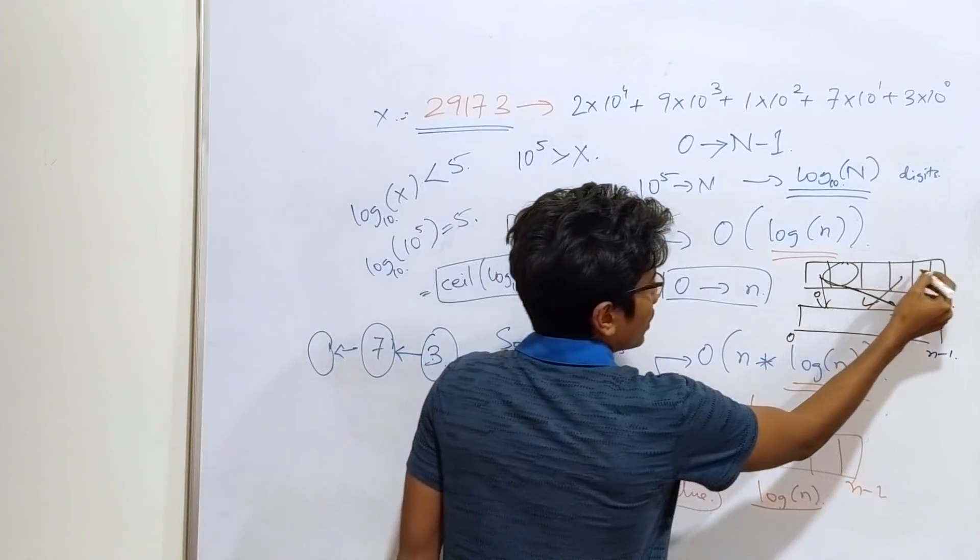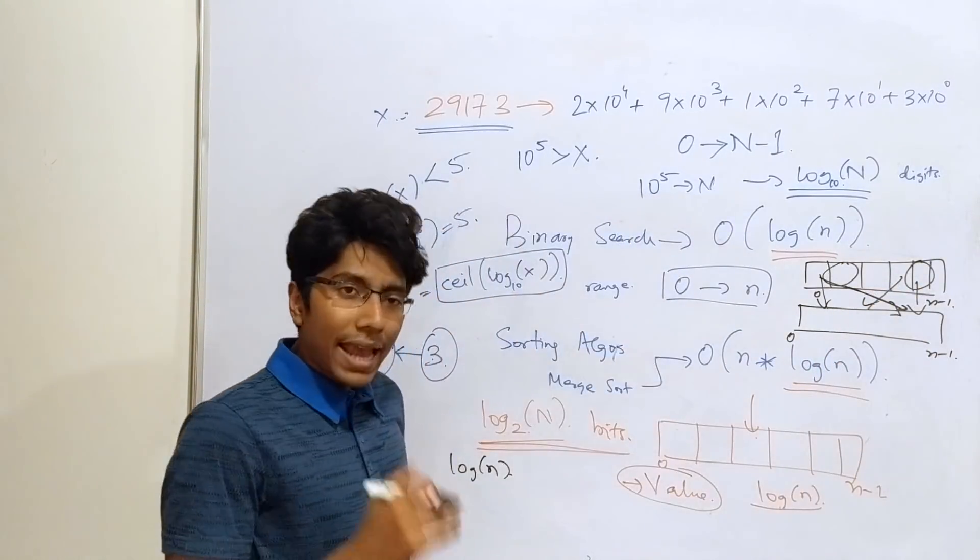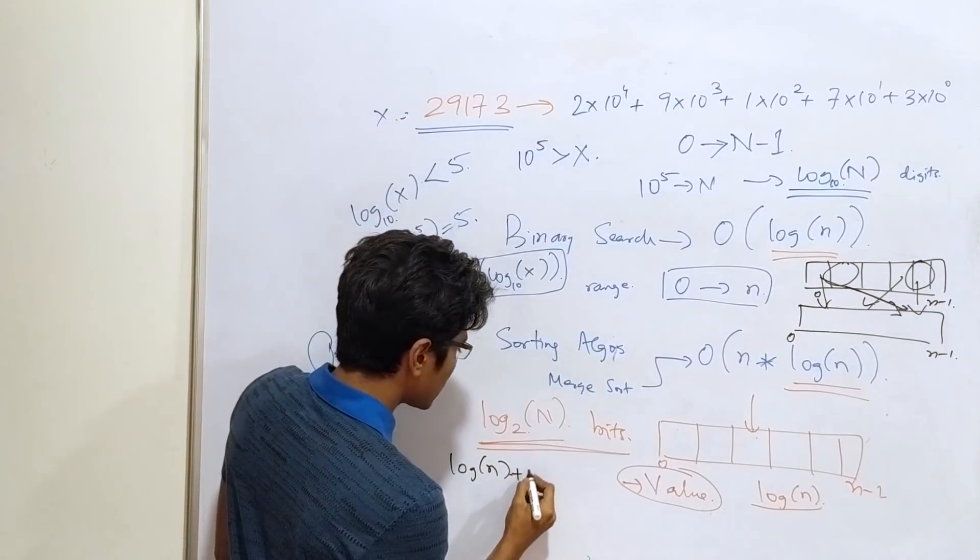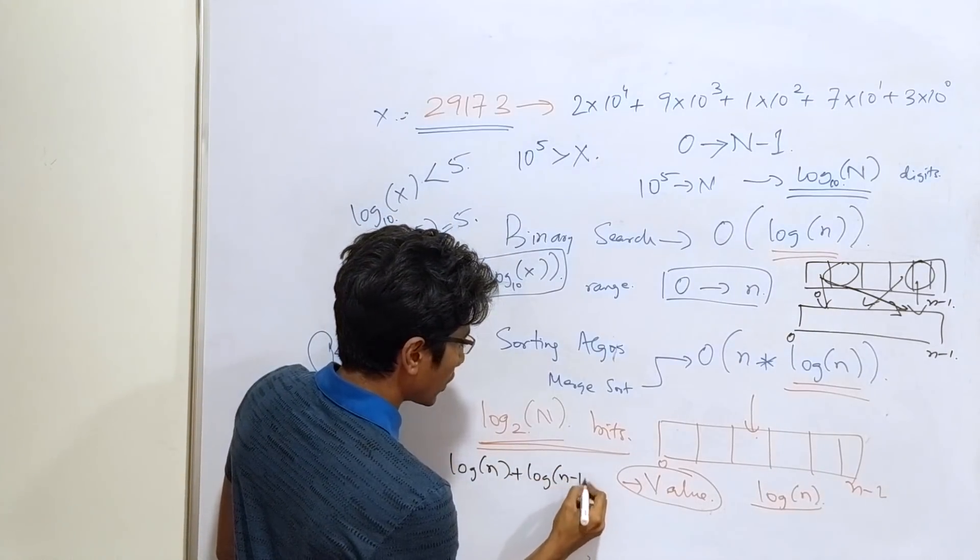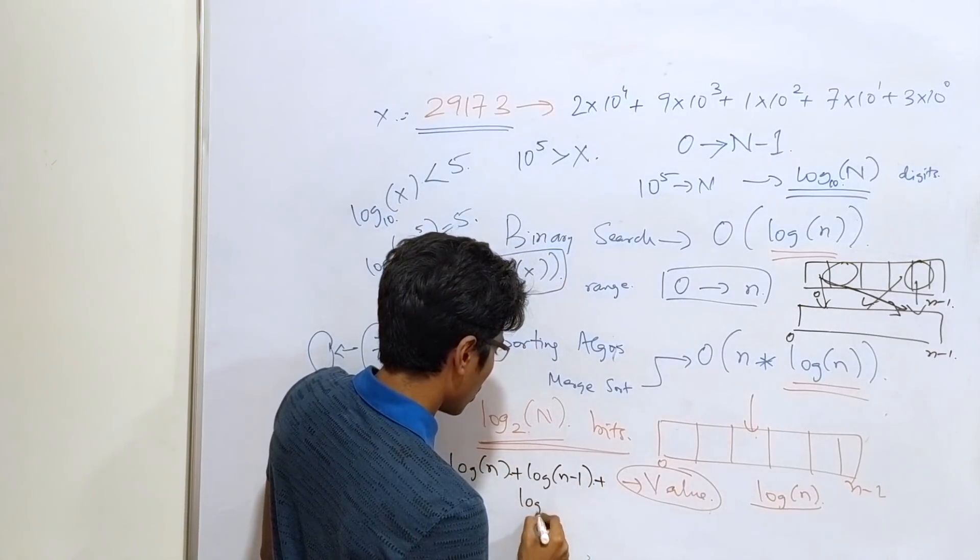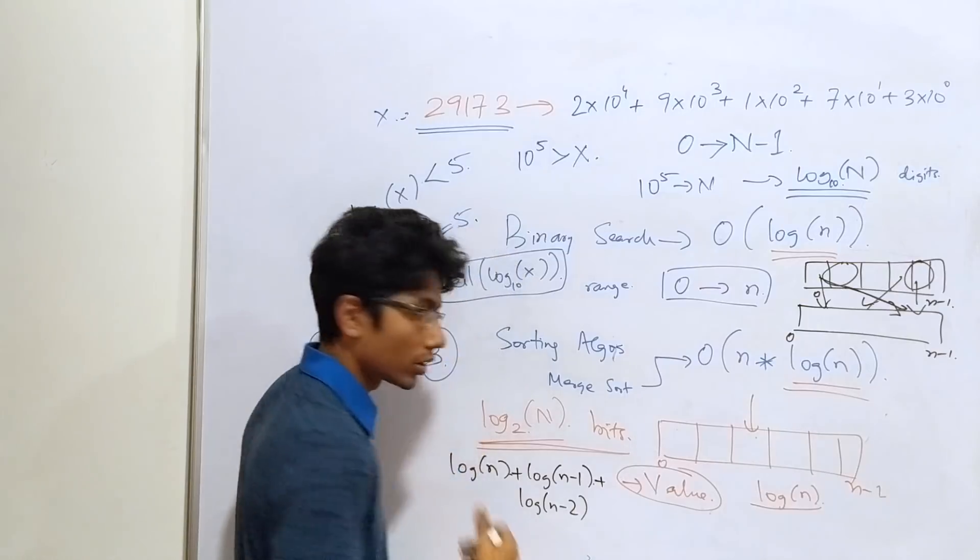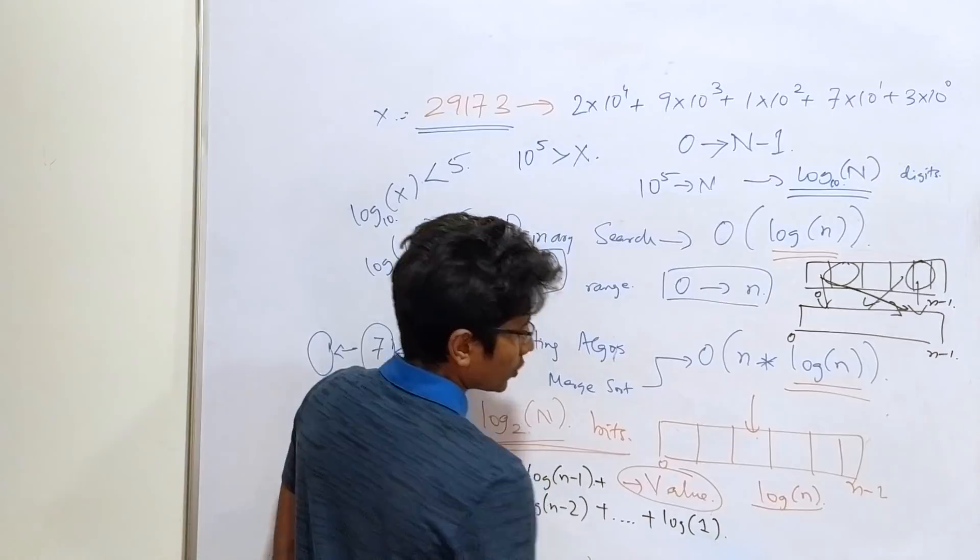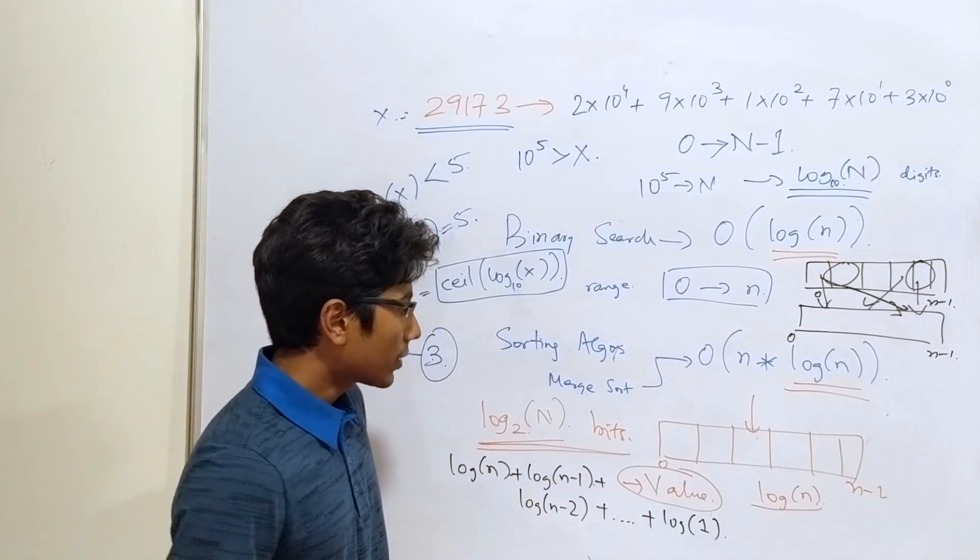So that will be at least log n here. The next element, let's pick this element, has n-1 spots to pick from. It will take, at least, log n-1 time, plus log n-2 time for the total, plus so on and so forth, up to log of 1, which is 0. Okay?